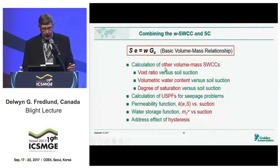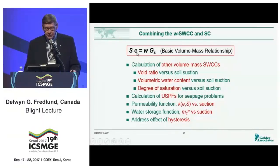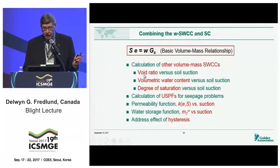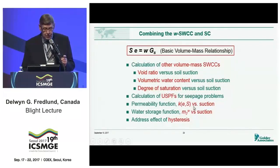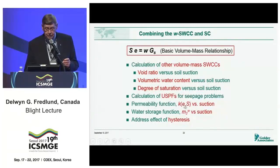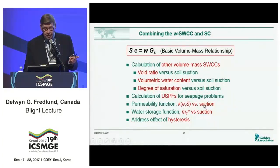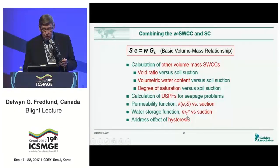Now we have two relationships. With the soil-water characteristic curve and the shrinkage curve, we can calculate a void ratio versus soil suction relationship, volumetric water content, degree of saturation, and all our unsaturated soil property functions. I'm going to use the seepage problem for illustration purposes: the permeability function, which can be a function of void ratio change and degree of saturation change, plotted versus suction; and the water storage function, which will be the slope of the volumetric water content versus suction curve.